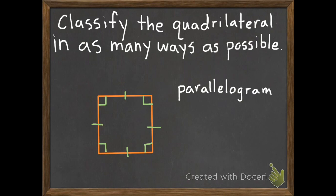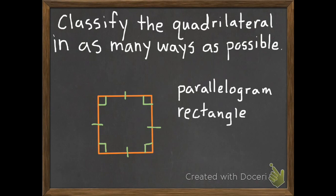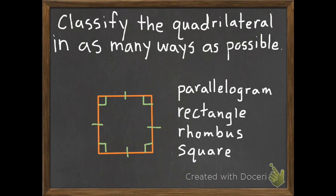Can it be a rectangle? The opposite sides are equal in length, opposite sides are parallel, and it has four right angles — so that shape can be a rectangle. Can it be a rhombus? The opposite sides are equal, opposite sides are parallel, and it does have four equal sides — so it is a rhombus. Can it be a square? Four equal sides, opposite sides are parallel, and four right angles — so this can be a square. Can it be a trapezoid — which has exactly one pair of parallel sides? No, because this shape has two pairs. That's the only one it cannot be.